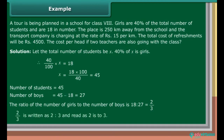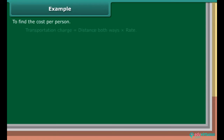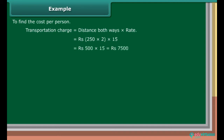2 upon 3 is written as 2 upon 3 and read as 2 is to 3. To find the cost per person: Transportation charge is equal to distance both ways into rate, which is equal to Rs. 250 into 2 into 15, which equals Rs. 500 into 15, which is equal to Rs. 7,500.